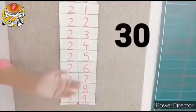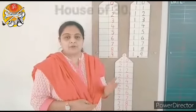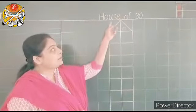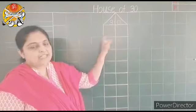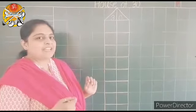Correct. 30. So today we are going to learn house of 30. So children, this is house of 30 and numerals 31 till 39 will come in this house.